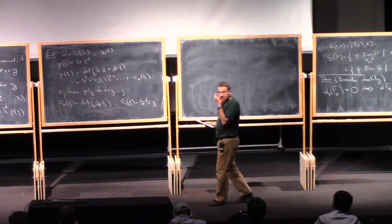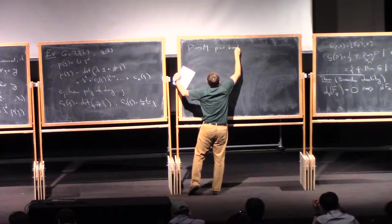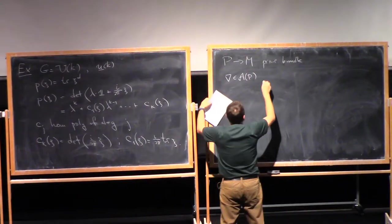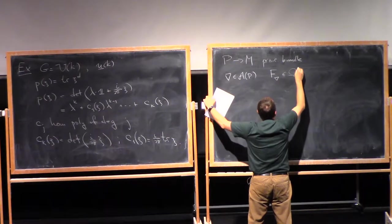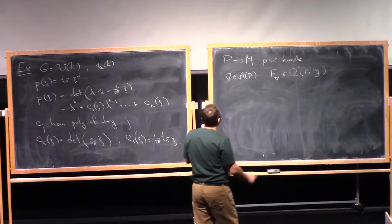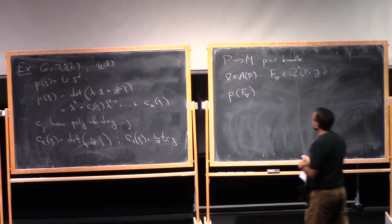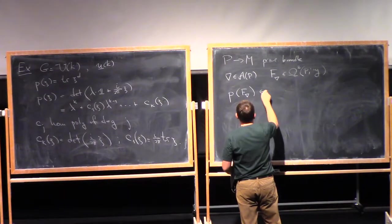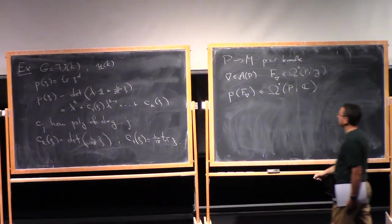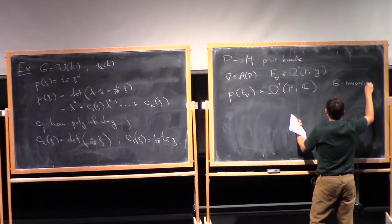Now, if you have a principal bundle together with a connection, so P over M is a principal bundle, if you pick a connection nabla on P, we have the curvature of nabla. This is now a two-form. You can think of this at least as a two-form on the total space of P with values in the Lie algebra g. And we can apply P to F_nabla, and this will give us some form on the total space of P with values in complex numbers.